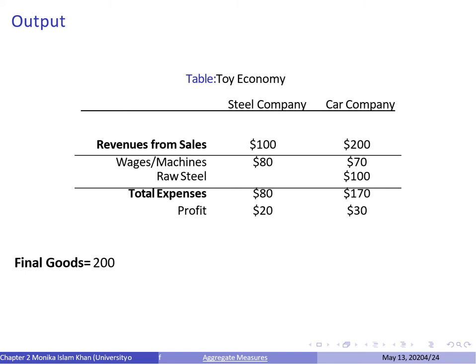Using the first method — final goods and services — our GDP equals $200, because we're only counting the sale of cars, which is our final good. Steel is an intermediate good that was used in the production of cars, so it is not counted as part of GDP under this first measure.